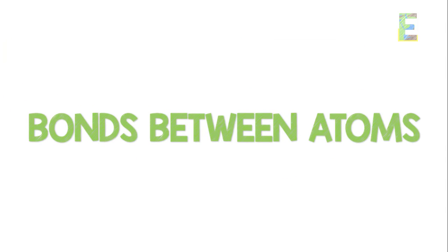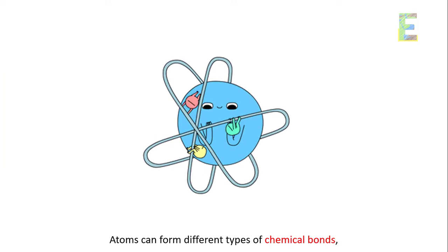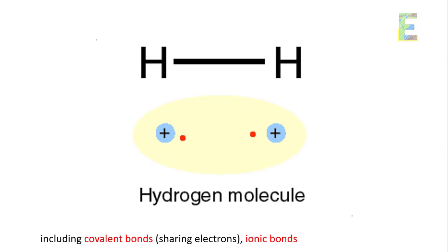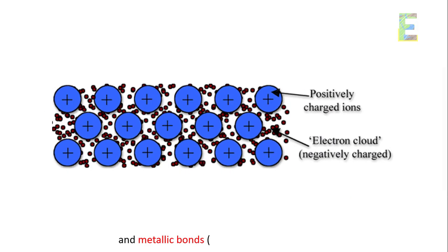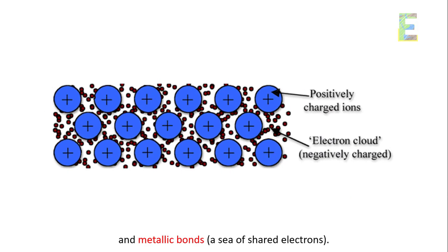Bonds between atoms. Atoms can form different types of chemical bonds, including covalent bonds, sharing electrons, ionic bonds, transferring electrons, and metallic bonds, a sea of shared electrons.